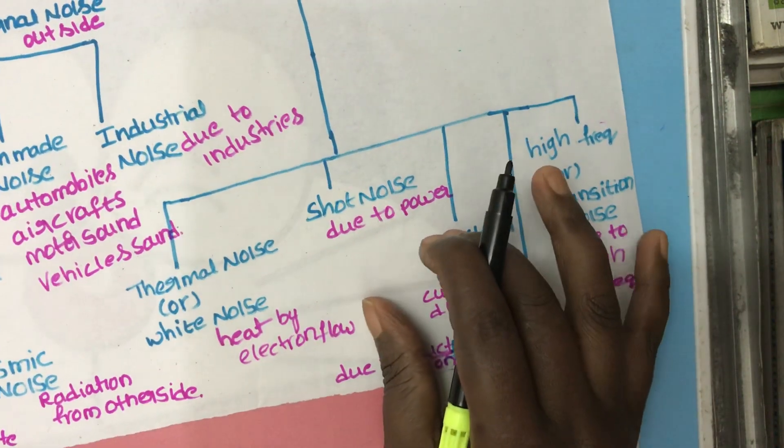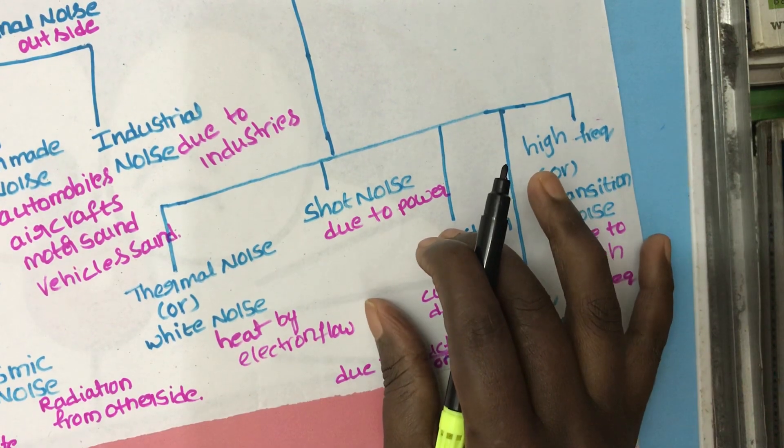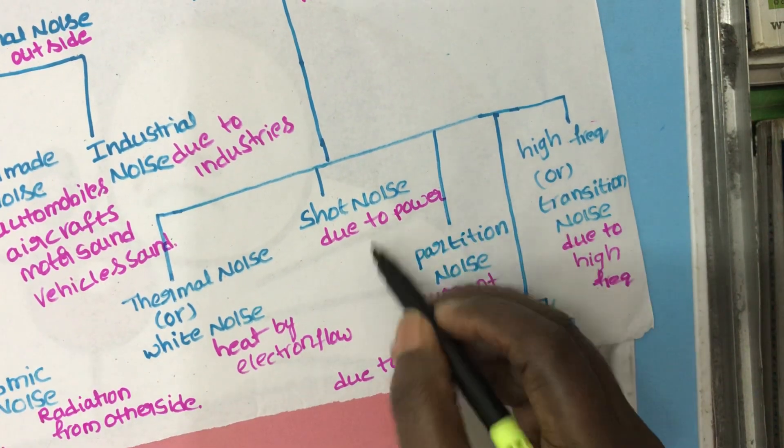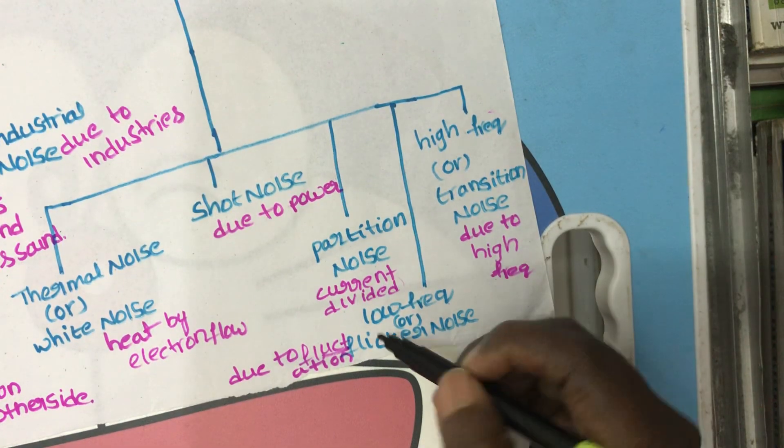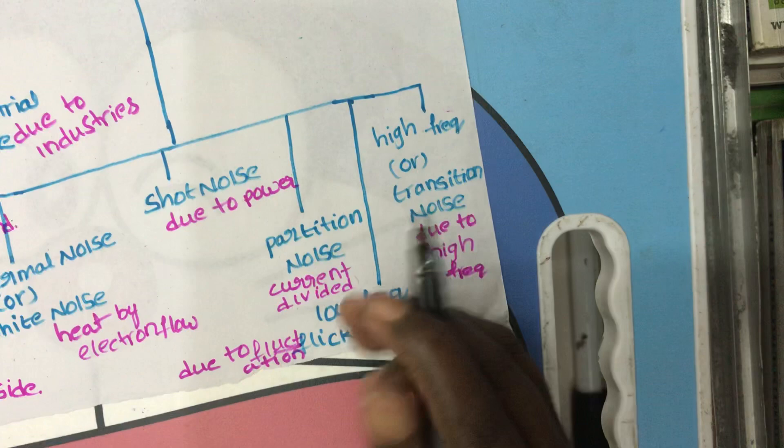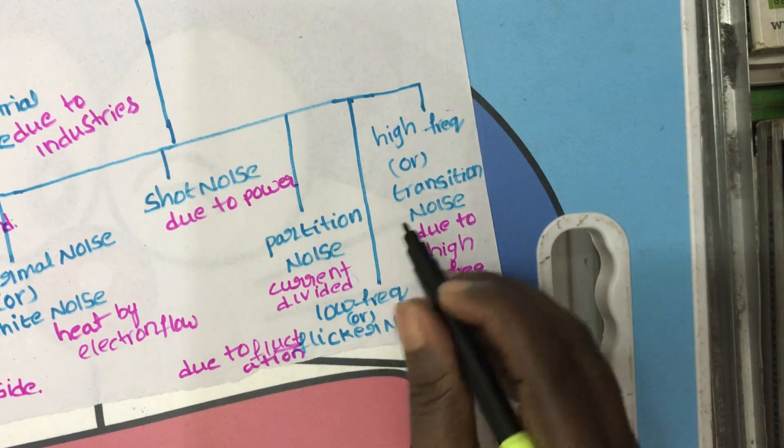Shot noise occurs because of variation of charge carriers. Partition noise happens when current gets divided into two or more parts.